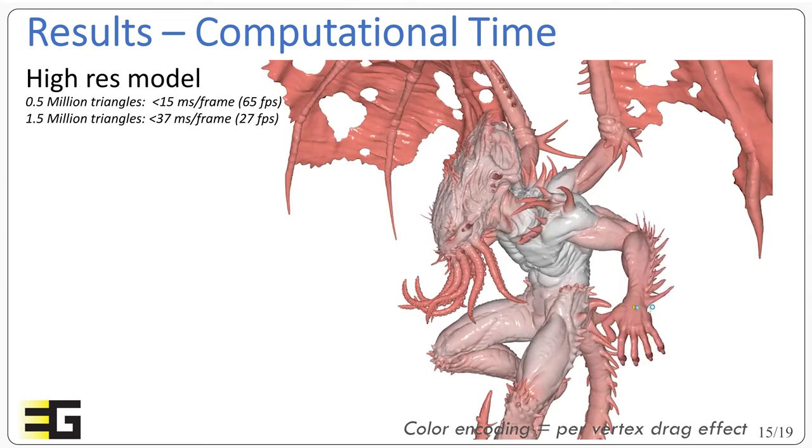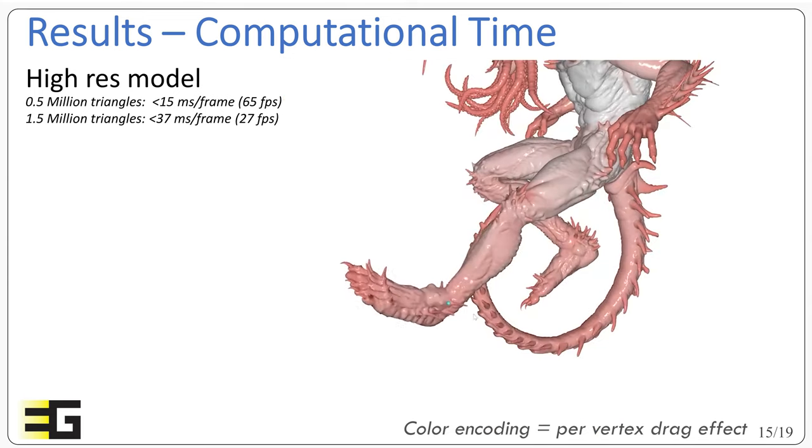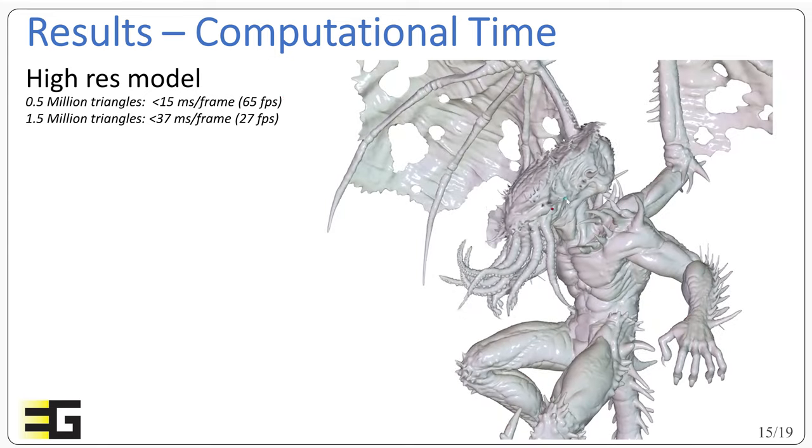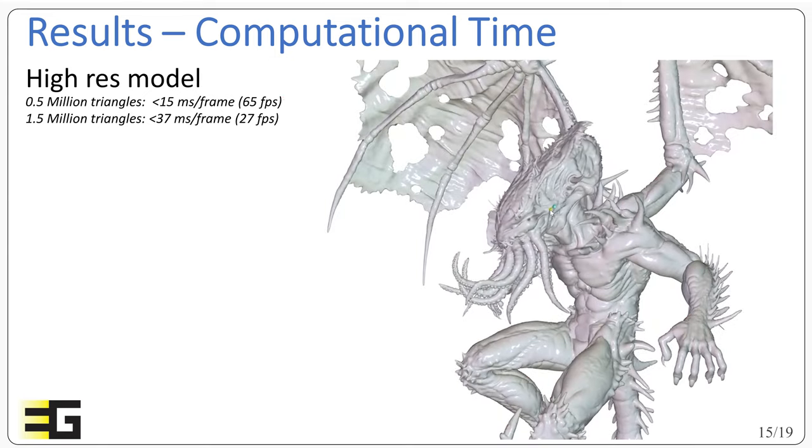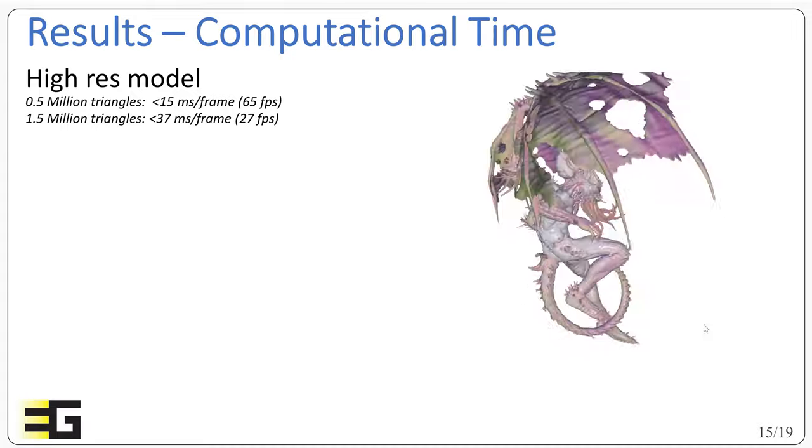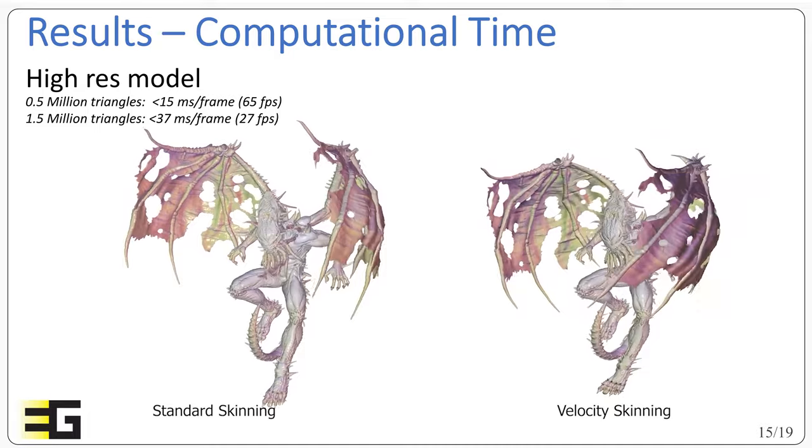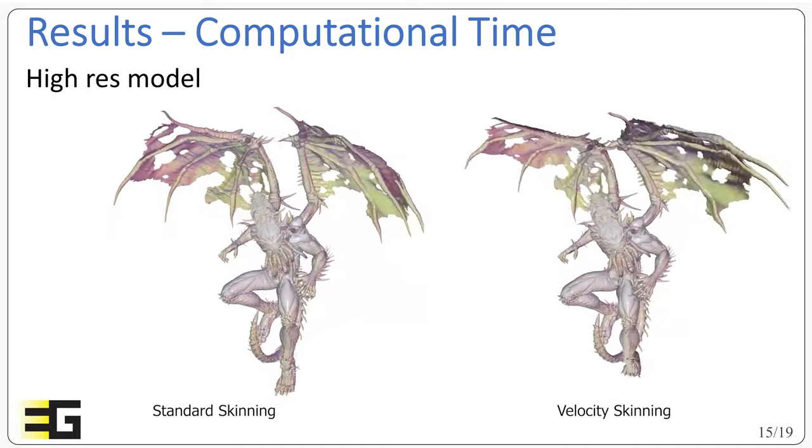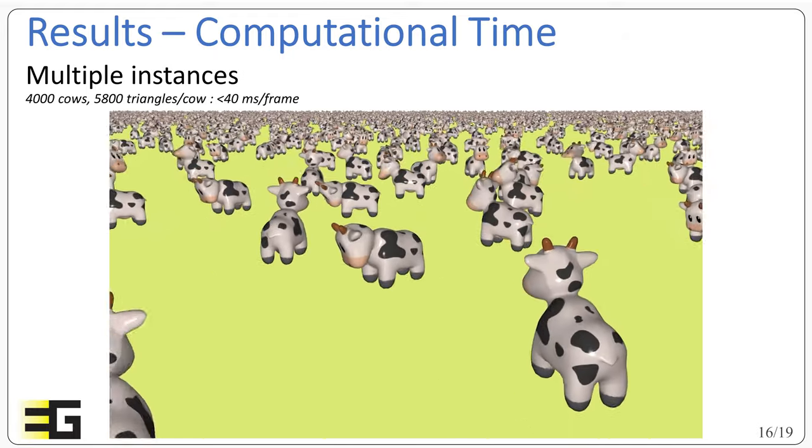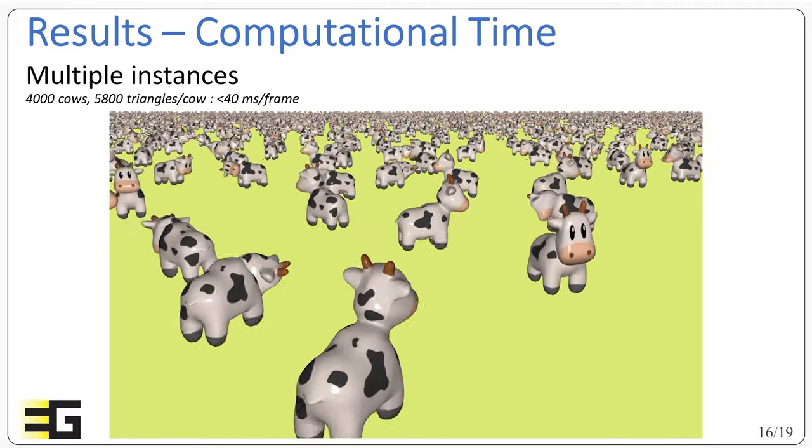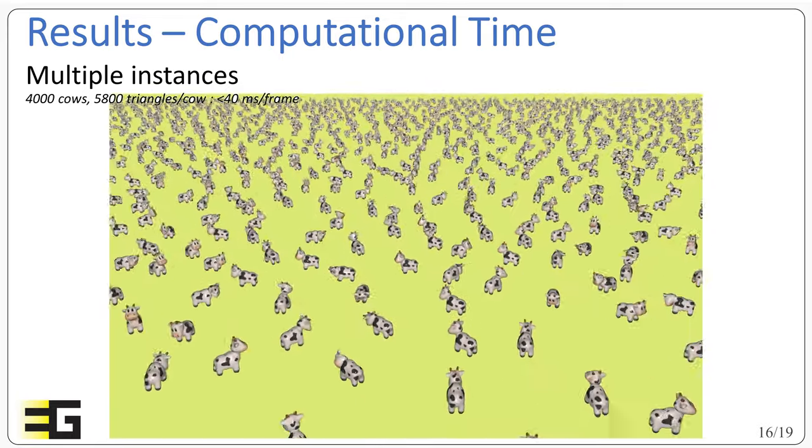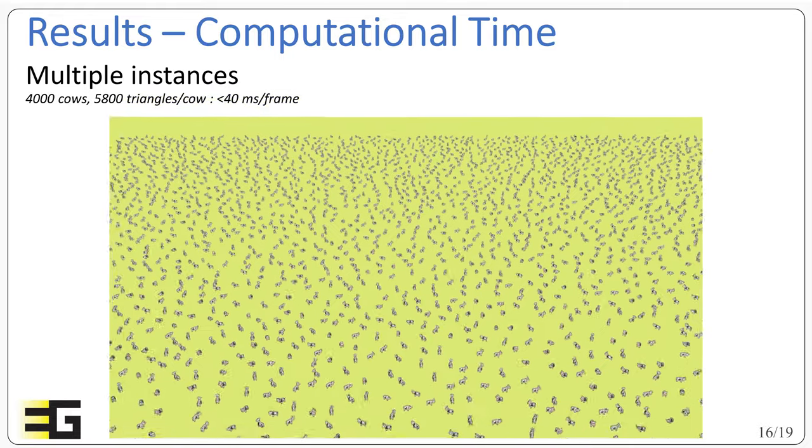We applied the vertex shader implementation on a high-resolution mesh on this monster model using a single consumer GPU on a laptop. The implementation was not overly optimized, so there is still room for improvement if needed. Compared to raw skinning using the same implementation, velocity skinning is taking twice the time of a skinning, which is very reasonable as it remains in the same order of magnitude. But of course, we should note that velocity skinning may not offer the possibility of extreme optimization as the velocity skinning weights are less sparse. We also applied velocity skinning to multiple instances of the same character. And in this case, we have this meadow full of cows. Each cow is almost 6000 triangles, and we have 4000 cows in the scene. And the entire computation was taking less than 40 ms per frame, so it remained real-time.